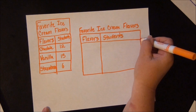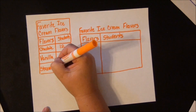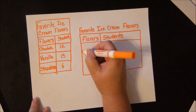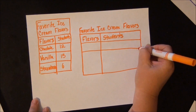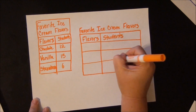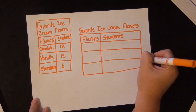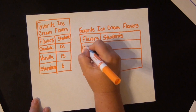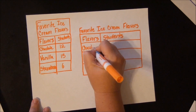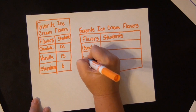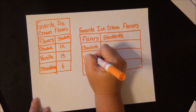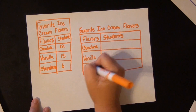I have three flavors: one, two, three. So I'm going to draw two horizontal lines. And my flavors are chocolate, vanilla, and strawberry.